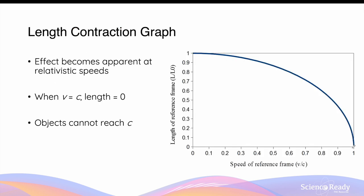Like time dilation, the effect on distance and length due to special relativity only becomes apparent at relativistic velocities. When the velocity of an object reaches the speed of light c, the length measured by a stationary observer becomes zero, which is physically impossible — this is why objects under special relativity cannot reach the speed of light. On the graph, the difference between lengths measured by different observers only becomes apparent when speed reaches a significant fraction of the speed of light, and length contracts and decreases exponentially as it approaches c.